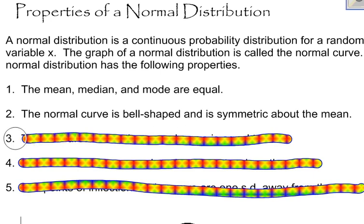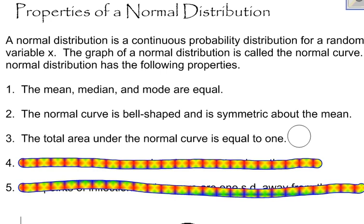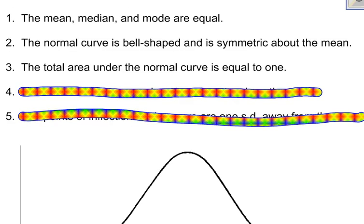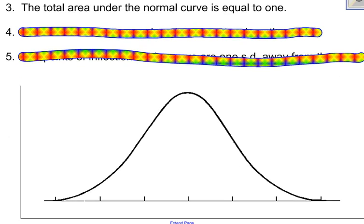The third thing that is true is the total area under the normal curve is equal to one. So now we're dealing with continuous variables. When we have a bell-shaped curve that looks like this that represents a normal distribution,